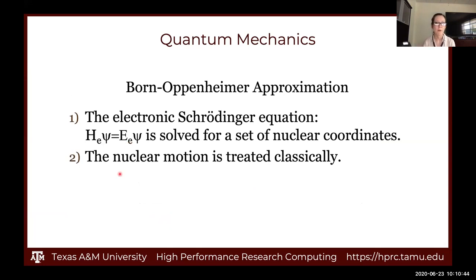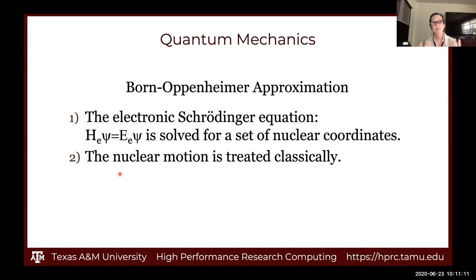We're also neglecting the coupling of electronic and nuclear motion. This is the widely known Born-Oppenheimer approximation. So we're going to be solving the electronic Schrödinger equation, completely decoupling nuclear and electron motion and solving them parametrically. Since electrons move substantially faster than the nuclei, we make the assumption that we can treat them somewhat independently as far as their motion. The electrons are seeing static nuclei. In reality they're coupled, but this approximation is generally okay for the vast majority of calculations.